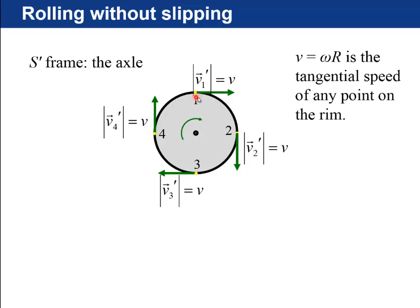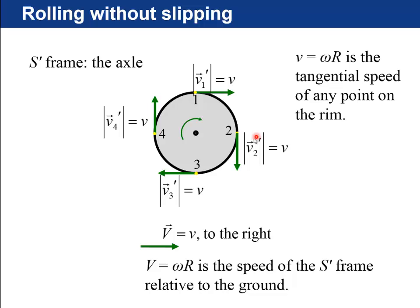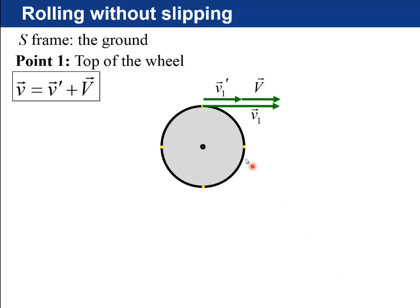And it's going to be to the right at the top, and the right side two is going to be moving down, three will be moving to the left, and four will be moving up. So now we're going to add this capital V to the right to all of these vectors, which is the speed of the S prime frame relative to the ground.